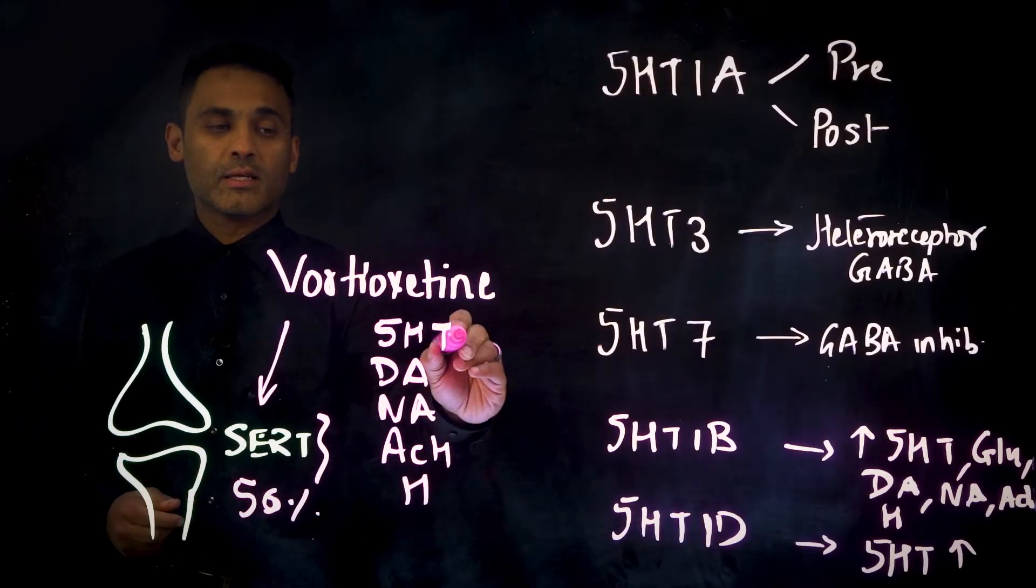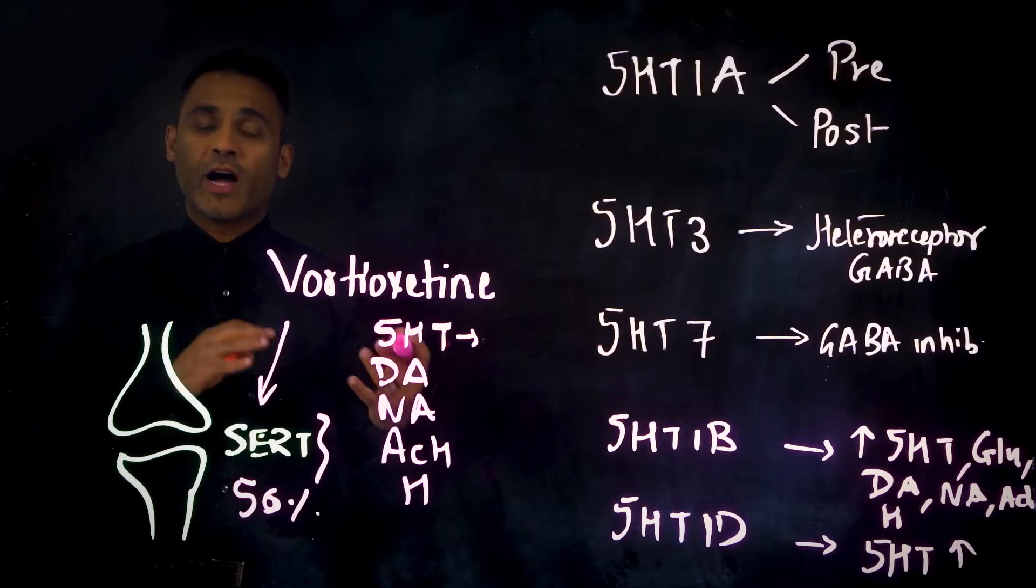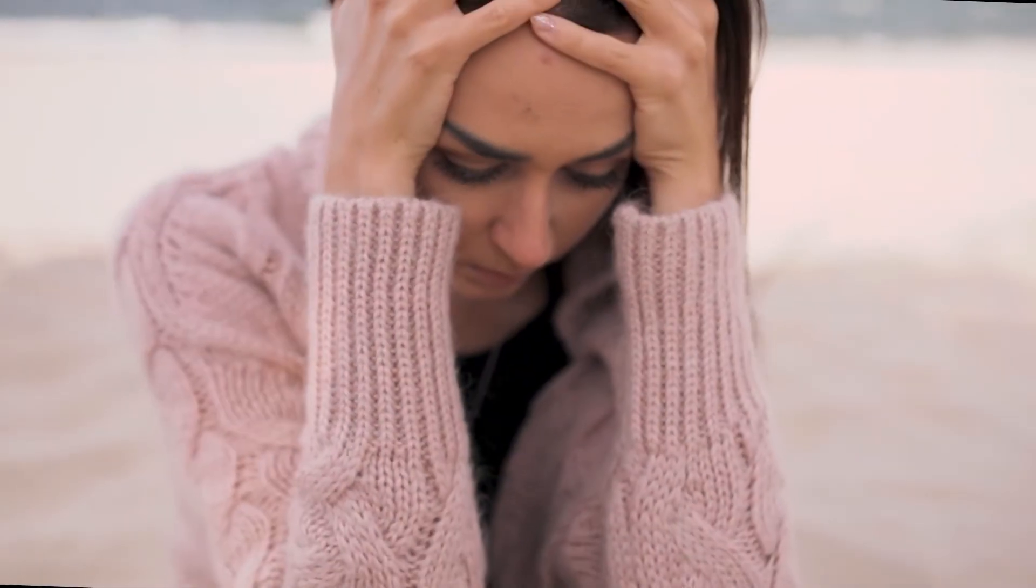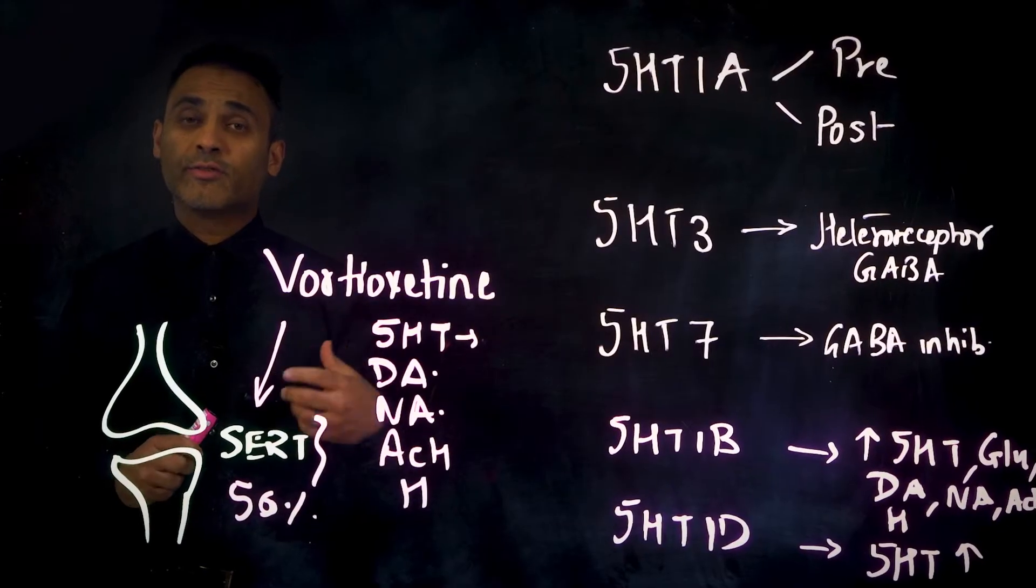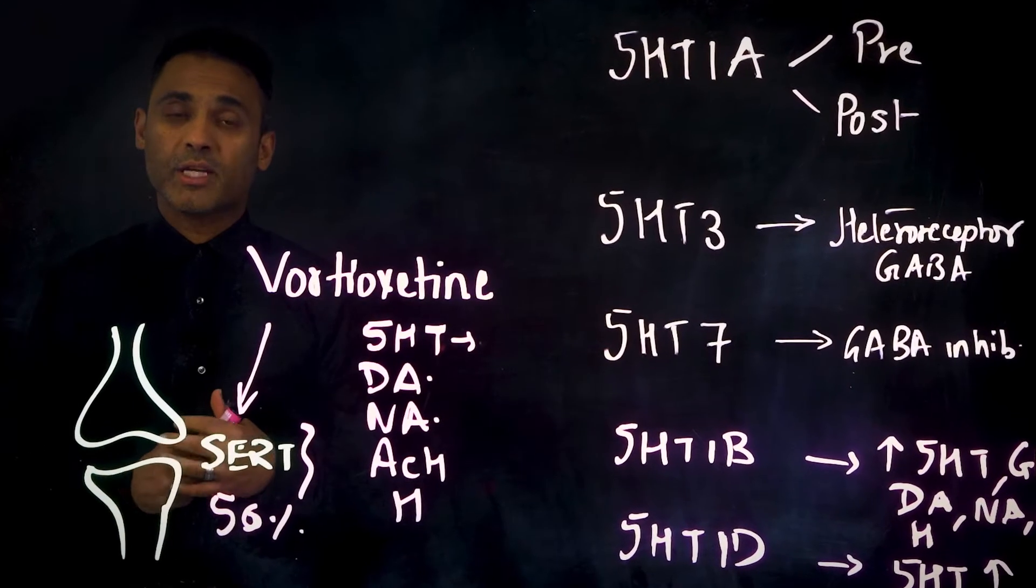We can see that these effects of 5-HT provide benefits with regards to depression and the treatment of depression, just like an SSRI. But dopamine and noradrenaline provide benefits in the more severe forms of depression as well, so melancholic depression. Acetylcholine for cognition and histamine for cognition.